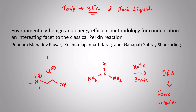The Perkin reaction is a useful way to synthesize coumarins. Now coming to modern trends and green synthesis of the Perkin reaction — there was a paper published in Green Chemistry titled 'Environmentally benign and energy-efficient methodology for condensation: an interesting facet to the classic Perkin reaction,' from the Institute of Chemical Technology, Mumbai (ICT Mumbai), published in 2011. What they did is reduce the temperature down to 32 degrees Celsius.